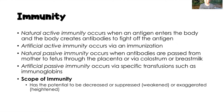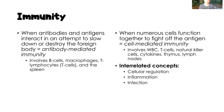Immunity can be decreased, suppressed, or weakened — or it can be exaggerated and heightened. When antibodies and antigens interact to slow down or destroy a foreign body, that's called antibody-mediated immunity, which involves B cells, macrophages, T cells (T lymphocytes), and the spleen. There's also cell-mediated immunity, where numerous cells — white blood cells, T cells, NK (natural killer) cells, cytokines, the thymus, and the lymph nodes — all work together to fight off an antigen.